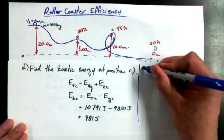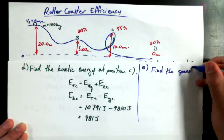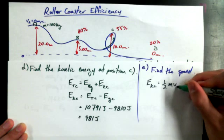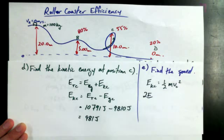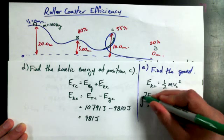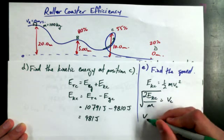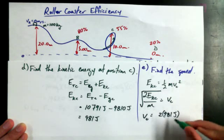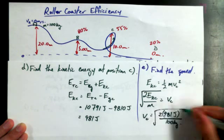Now, if I was going to do a part E to this, find the speed, can we do it? Yes, we can do it. EK at position C is one-half MVC squared. Set the kinetic energy equal to EK. And we can submit our values. VC is equal to 2 times 981 joules all over the mass of this roller coaster. We said it was 100 kilograms way back when. All square rooted.